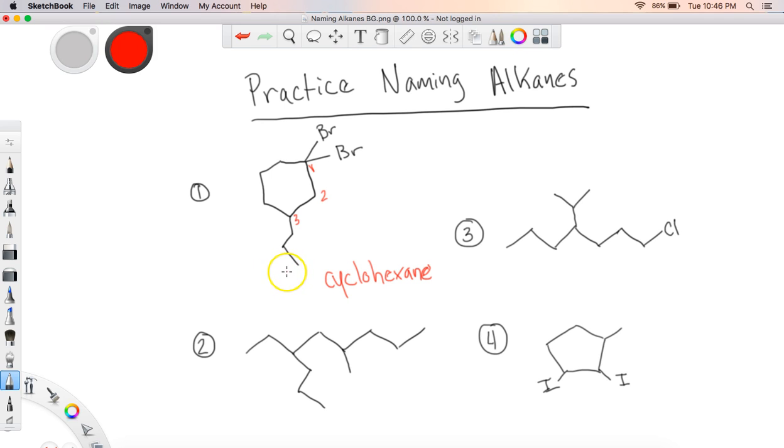So I'm going to list this as 1,1-dibromo and then I would continue with 3-propyl cyclohexane. That would be the full official name for that compound up there.